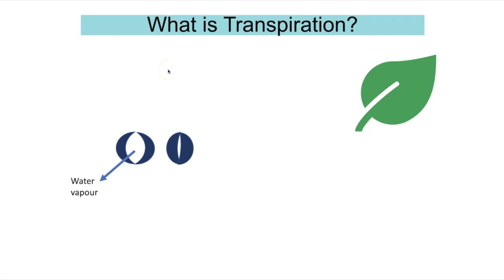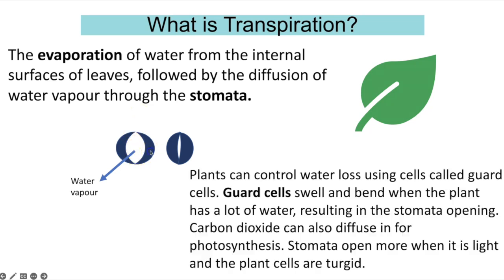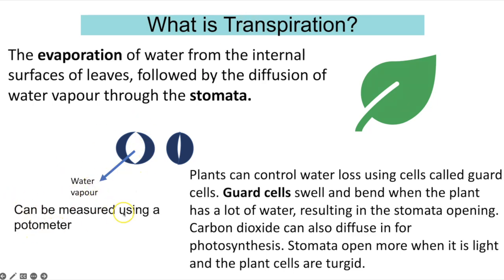Transpiration is the evaporation of water from the internal surfaces of the leaves, followed by diffusion of water vapour through the stomata. Stomata are holes in the leaves created by guard cells, which allow plants to control water loss. Guard cells swell and bend when the plant has plenty of water, creating the stomatal opening. This enables carbon dioxide to diffuse in while water vapour evaporates out. Stomata open when it is light and plant cells are turgid. The rate of transpiration can be measured using a piece of apparatus called a potometer.